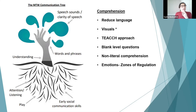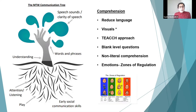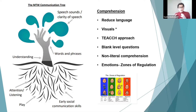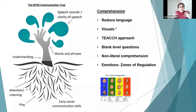For emotions, Zones of Regulation can be a really nice approach. It uses different colours to put zones and emotions into categories. I really like it because it doesn't say you can't be cross — it acknowledges when you are cross, helps you identify it, and says it's okay. It's also about having a toolbox: when this person is in the red zone, this particular thing really helps them — like a beanbag. A sensory or occupational therapy assessment can help identify what sensory strategies work for that person.